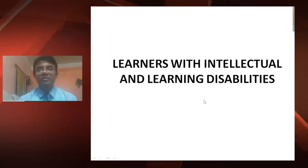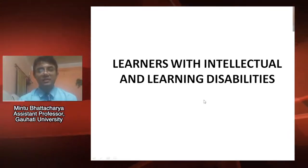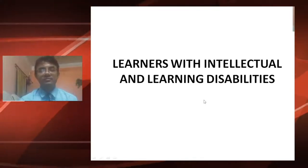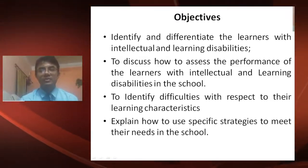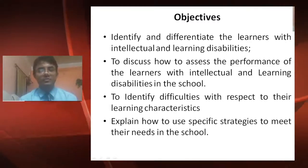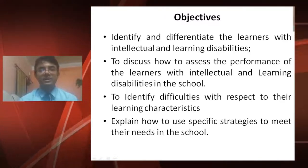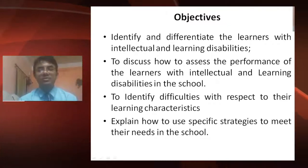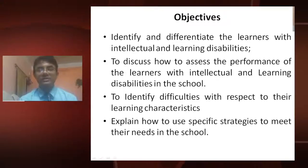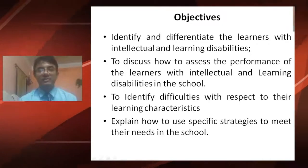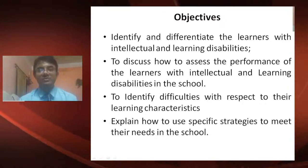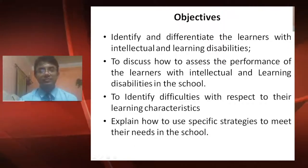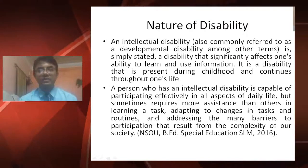Dear students, we are going to discuss about learners with intellectual and learning disabilities. This is Unit 3. The objectives of Unit 3 are: first, to identify and differentiate the learners with intellectual and learning disabilities; second, to discuss how to assess the performance of the learners with intellectual and learning disabilities in school; third, to identify difficulties with respect to their learning characteristics; and last, to explain how to use specific strategies to meet their needs in school.